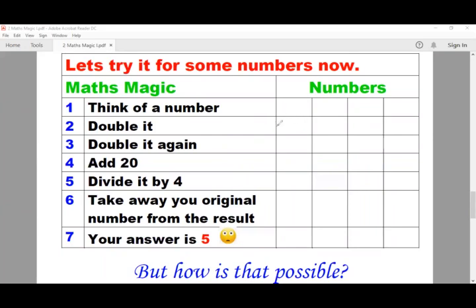There's no limit on thinking of any number. You can think of any number, but to keep it easy for ourselves, I'm going to think of a nice and easy number. Let's think of 10. Double it: 20. Double it again will give me 40. And if I add 20 to this, I'm going to get 60. Dividing it by 4 will give me 15. And from 15, if I take away my original number, which is 10, I will actually get 5.